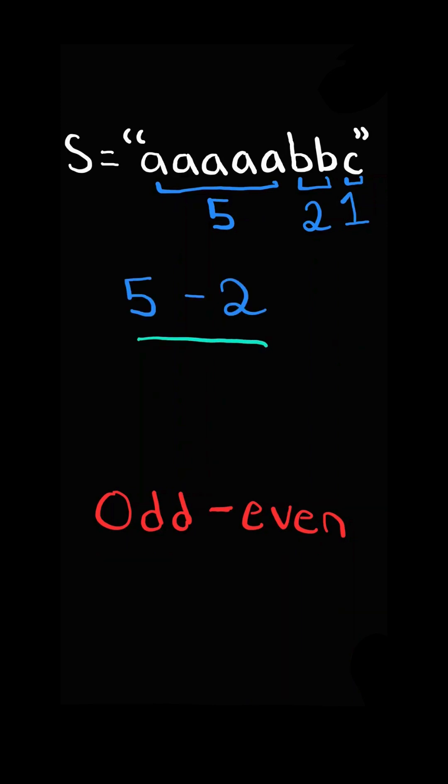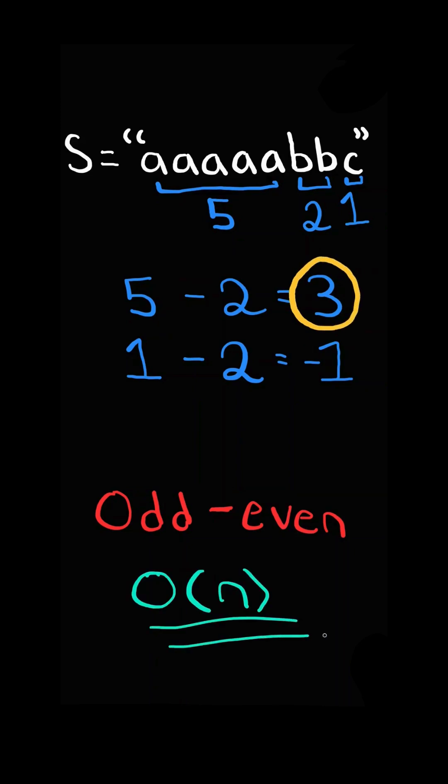In this case, we can calculate the difference between 5 and 2, or 1 and 2, and we return the max difference. We will solve this in O of n time and O of 1 space.